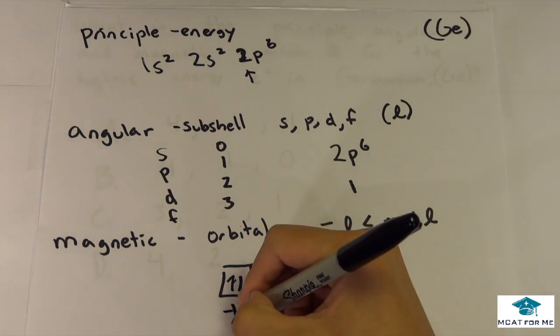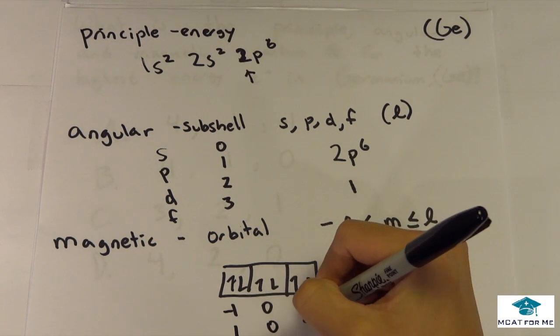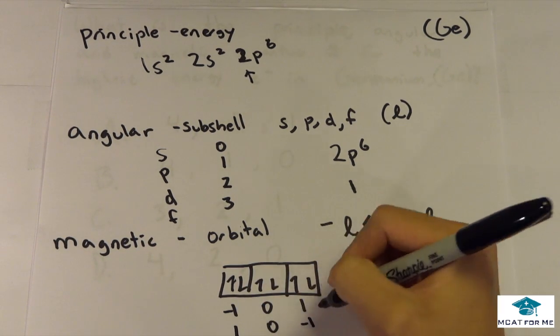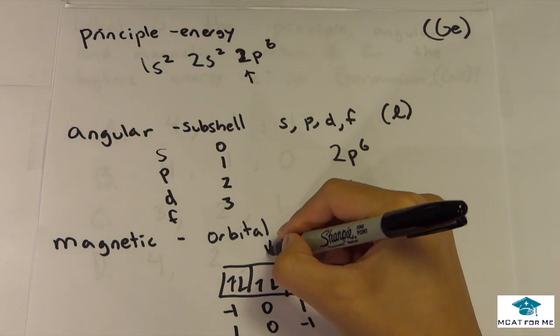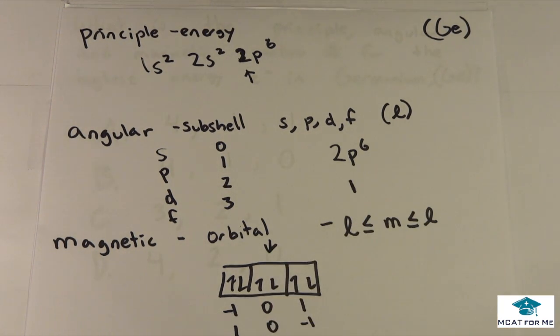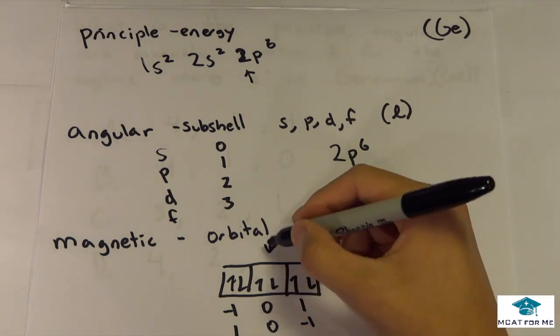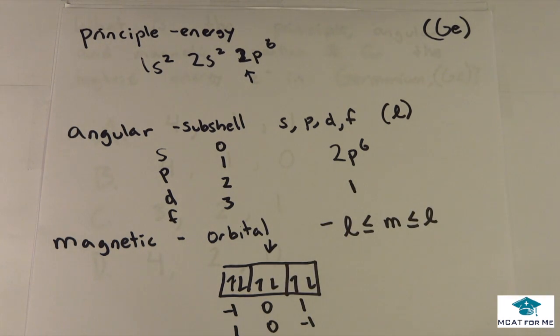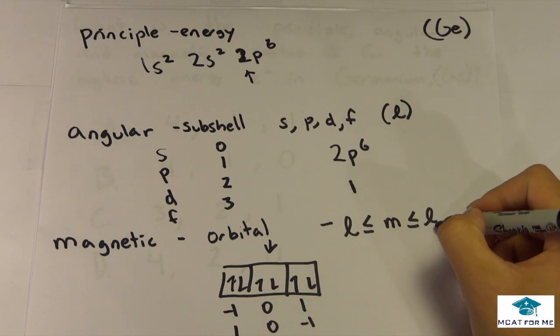But the thing is, this could just as likely be 1, 0, and negative 1. We don't know. So generally, they'll only ask us the middle one, because these two are arbitrary. You don't know if it's negative, you don't know if it's positive. You just know the middle has to be 0. So that's pretty much what it is, it goes from negative L to L.